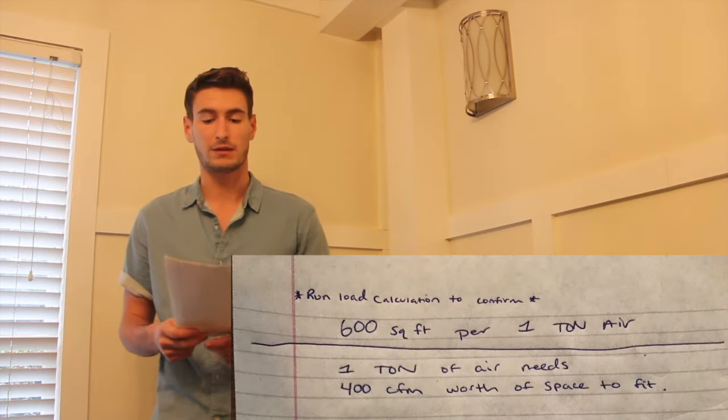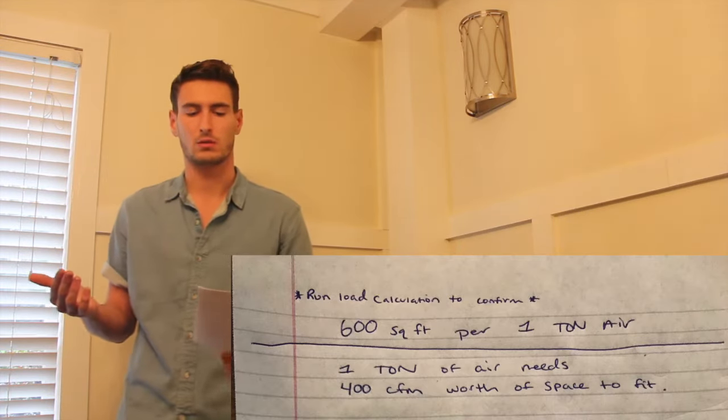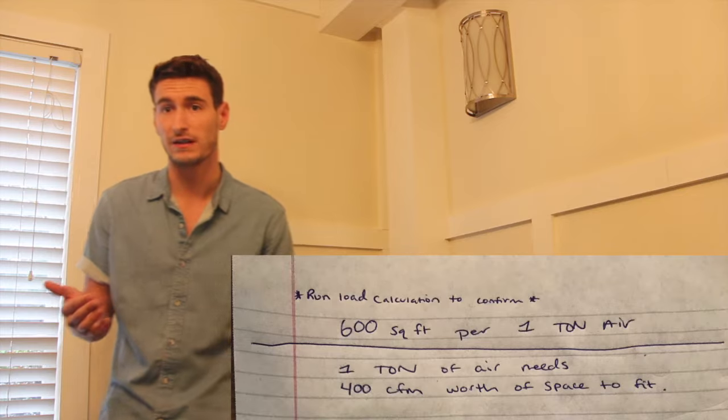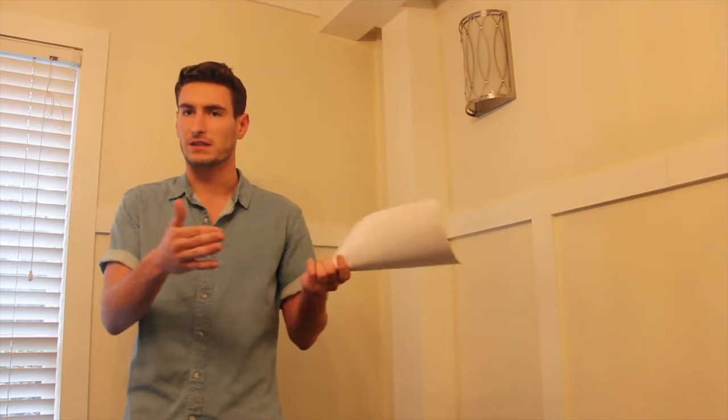And then with one ton of air, transitioning into the ductwork, you need 400 CFM worth of space, which is cubic feet per minute worth of space, in order to fit all of that airflow into the duct itself. You don't want it to be drastically oversized, because if it is, then the air isn't going to move as efficiently through the ductwork. It moves based on static pressure, so it pressurizes the duct first and then moves forward. So you need to be able to keep enough pressure so you're able to get the airflow from the system all the way to the actual supply duct itself. So one ton of air, 400 CFM, we'll keep that in mind.